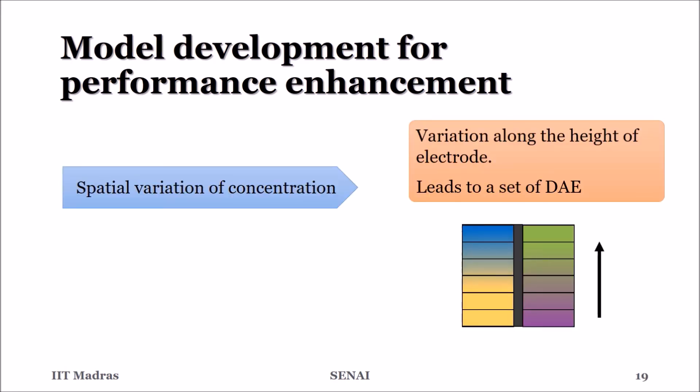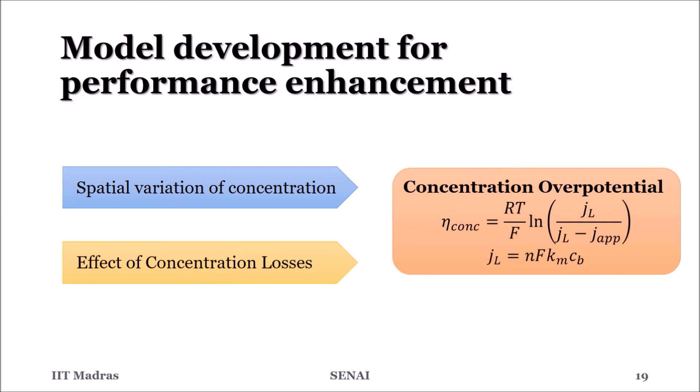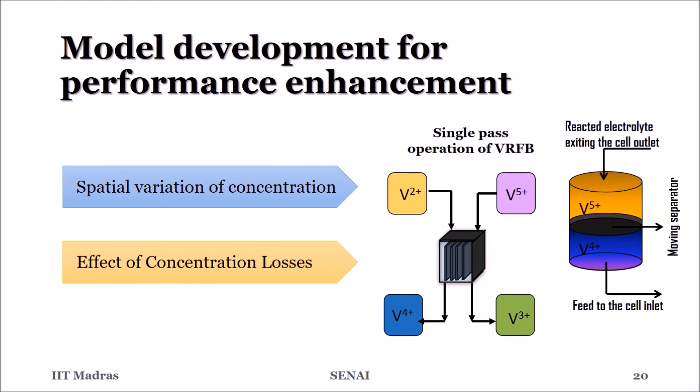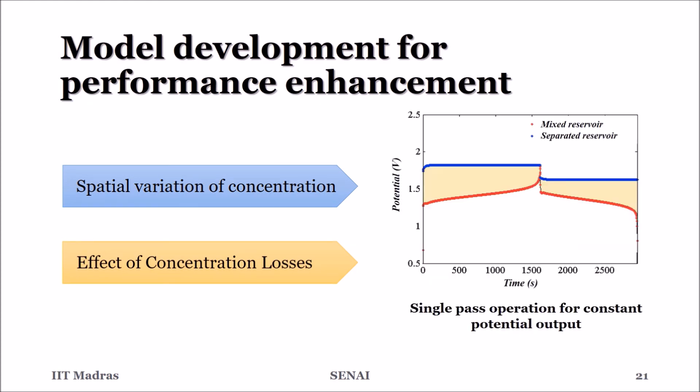In further attempts, spatial variation of concentration within the electrodes was modeled as a 1D formulation, yielding a system of differential algebraic equations. This, along with the inclusion of mass transfer losses is used to study the single pass operation of a VRFB, which is expected to give a steady state constant potential output.